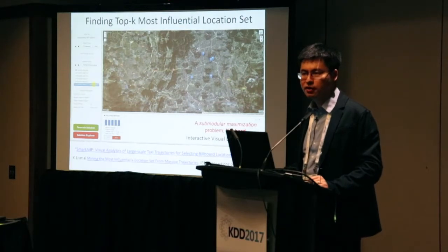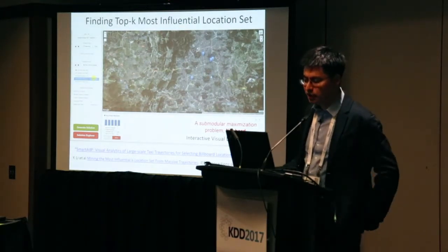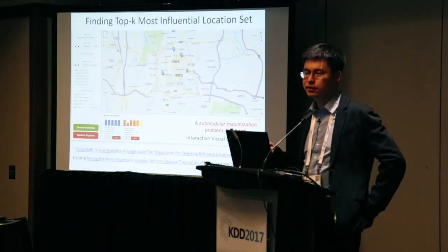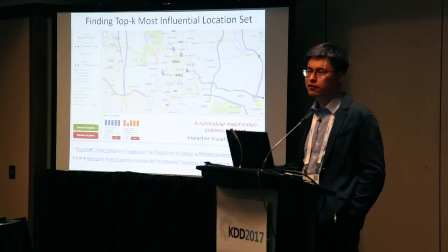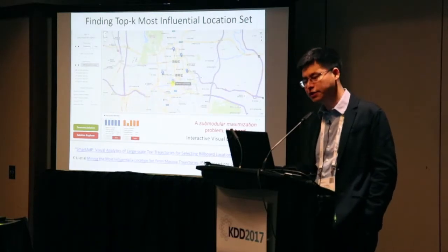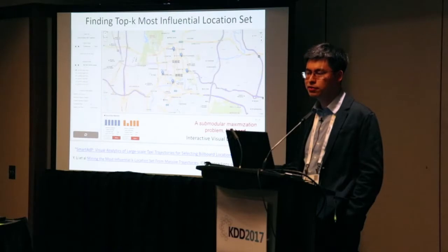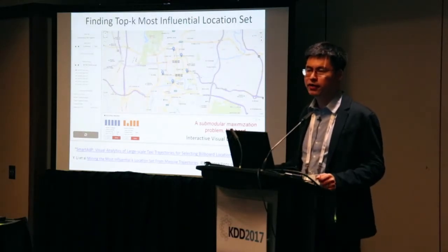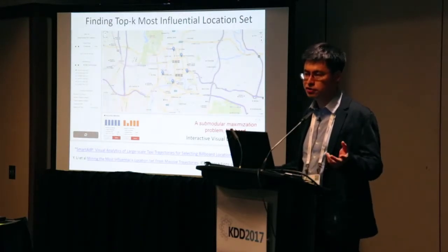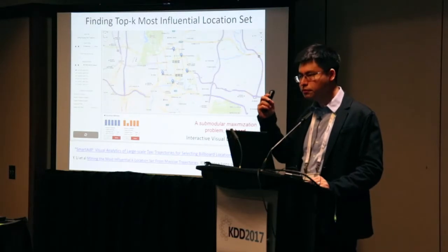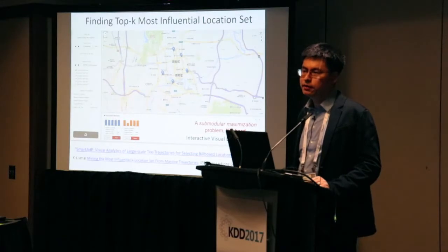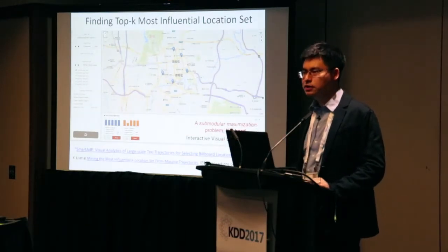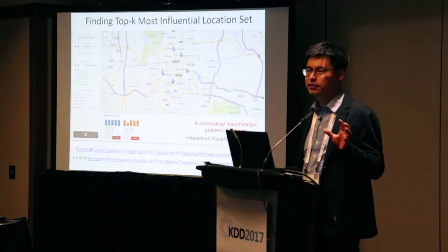Why should we care about efficiency? Because there are many criteria to consider when deploying a charging station beyond traffic volume — such as whether there is vacant space for a station, or whether there is a shopping mall or restaurant nearby where people can go while charging their electric vehicles (since charging may take a couple of hours). We remove ineligible locations and let the algorithm regenerate results.